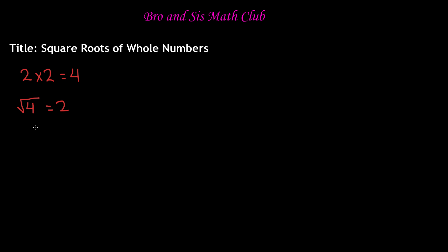Now, I know that 2 times 2 is 4, but how exactly did I get 2? Here is a whole logical explanation. Let's keep the same example — the square root of 4. First of all, this symbol here, the square root symbol, is also known as a radical. This radical is equal to 1 half. So the radical symbol is equal to 1 half.